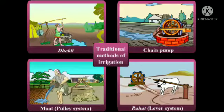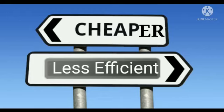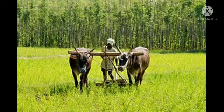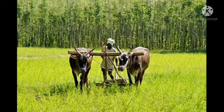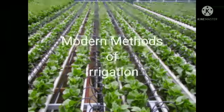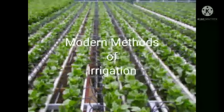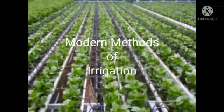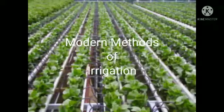The traditional methods are cheaper but less efficient. They involve human labor or the use of animals. Let us now discuss about modern methods of irrigation. The modern methods of irrigation help us to use water economically.